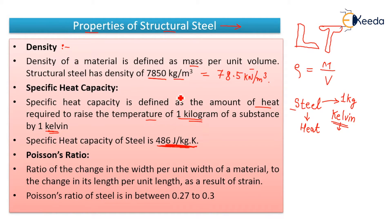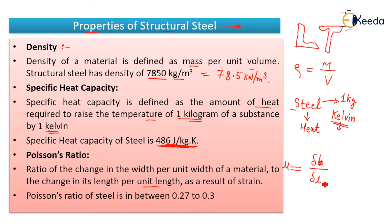The next property of structural steel is Poisson's ratio. It is the ratio of change in width per unit width of a material to the change in length per unit length. Simply, it is the ratio of change in one dimension to the change in another dimension. This change happens when the material is strained to a certain limit. The Poisson's ratio for structural steel is in between 0.27 to 0.3.